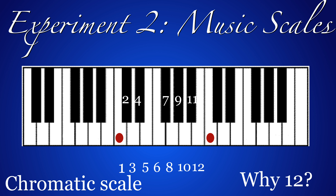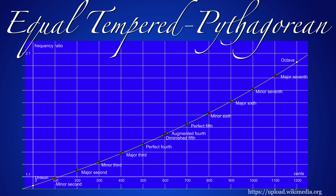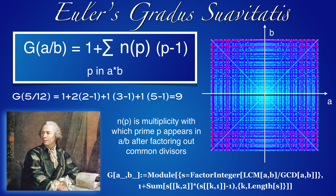Here's another riddle: why does western music have the 12-tone chromatic scale? The Pythagorean scale is close to a tempered scale — that's the Diophantine problem. One can explain this using a notion pushed forward by Euler. He assigned to a rational number a over b a number called gradus suavitatis, a degree of sweetness. First reduce the fraction a over b, then look at all prime numbers which appear in a times b.